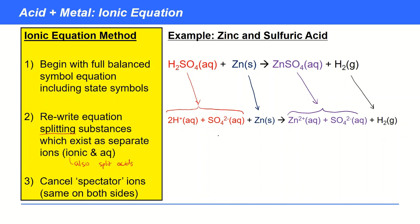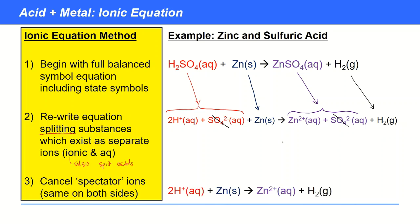The next stage is to cancel spectator ions — anything that is the same on both sides. SO₄²⁻ appears on both sides, so it is cancelled because it hasn't done anything; it's just watching, like a spectator. Zn has no charge on one side and is Zn²⁺ aqueous on the other, so those are different. After cancelling, we get the final ionic equation.